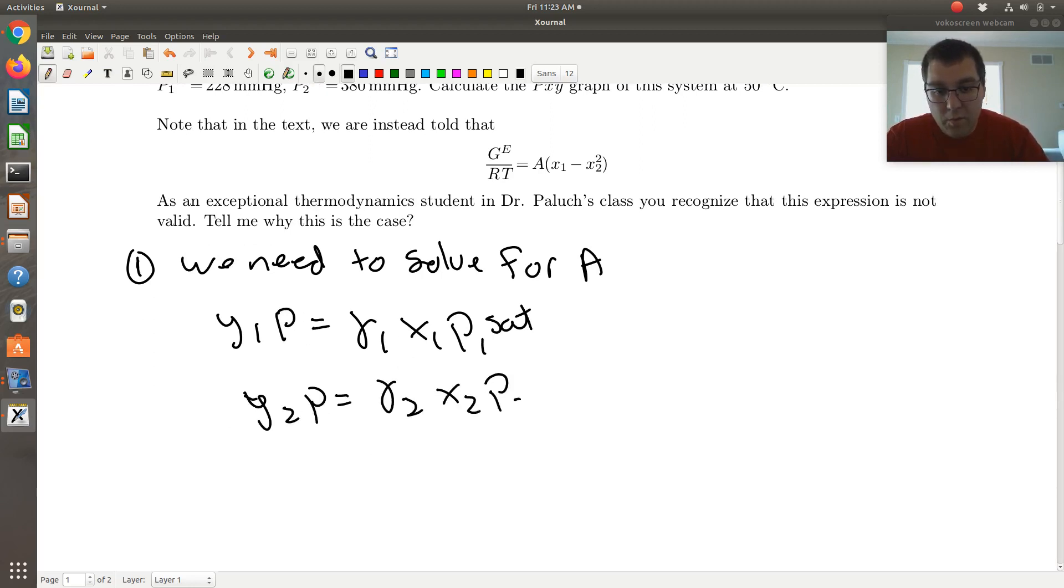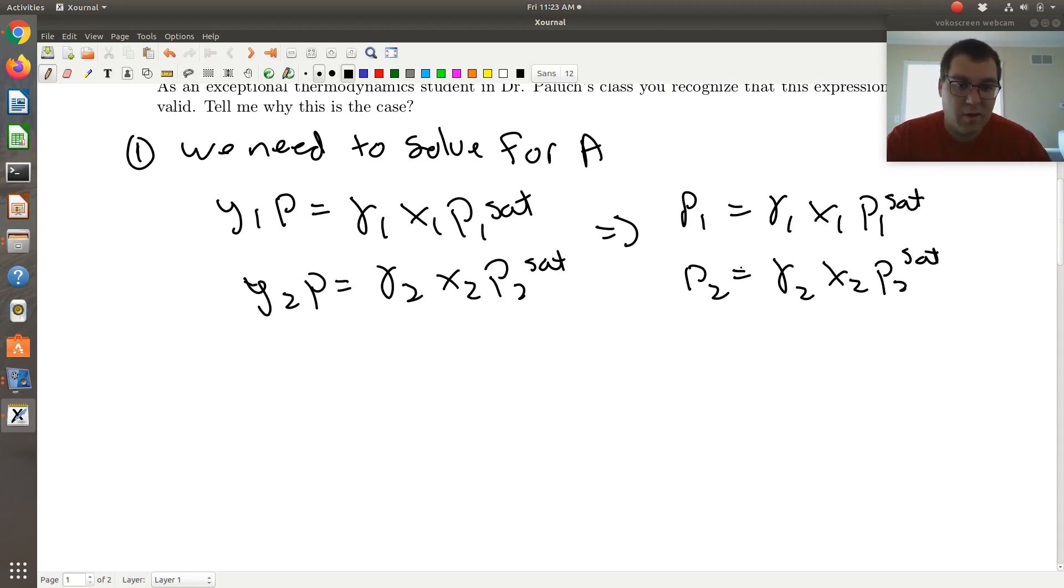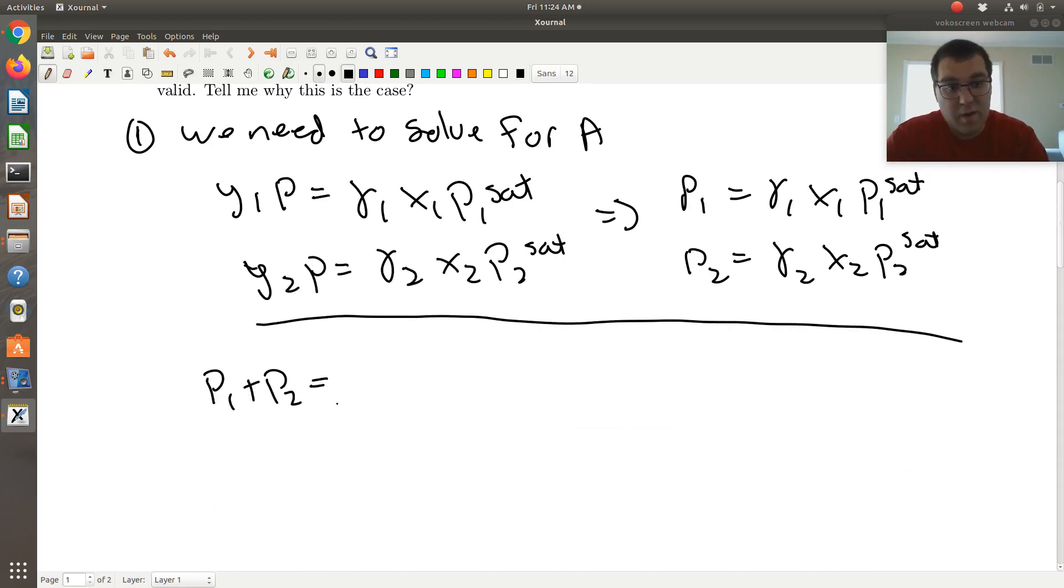And I'm going to rewrite this in the context of this problem as P1, partial pressure of component 1, is equal to gamma 1 X1 P1 sat. So far so good. What I'm going to do next is I'm going to add the two equations together. So if I add them, on the left hand side I'm going to have P1 plus P2, which is actually P. But I'm writing in terms of little p's because we're given partial pressure, not necessarily the total P. P is gamma 1 X1 P1 sat, plus gamma 2 X2 P2 sat.